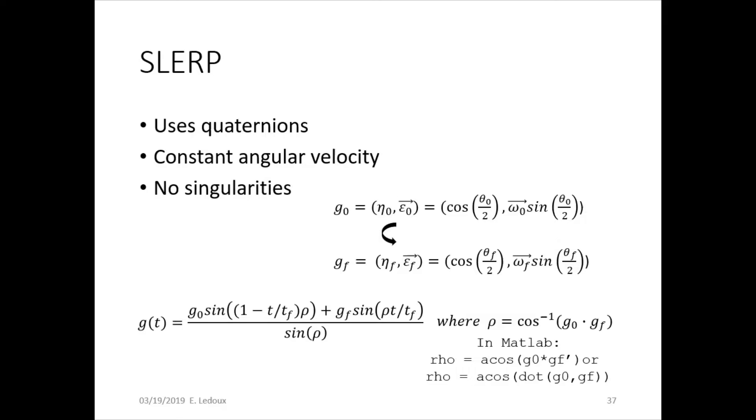So g is the quaternion which has four parameters, eta is a scalar, and epsilon is the vector that is proportional to the angular velocity direction. The quaternion formula for interpolation is shown below at the bottom. It's the initial quaternion times sine of a fraction times rho plus final quaternion times sine of a fraction times rho divided by sine of rho, where rho is the dot product of the initial and final quaternions with the arc cosine taken of it. The way you would type that in MATLAB is shown at the bottom right, but you can also do this with your calculator writing out things by hand.